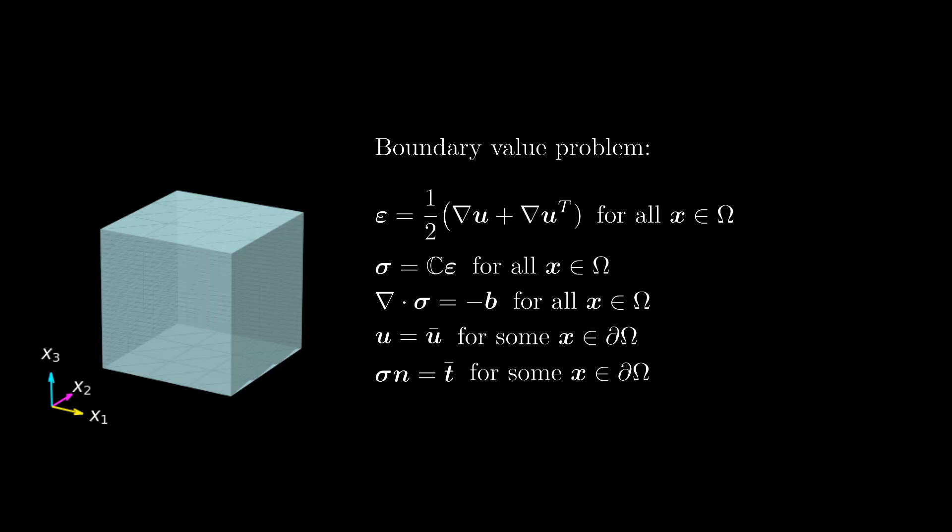In this solid mechanics example, the boundary value problem relates the displacement field to the strain field, to the stress field, and to physical quantities at the boundary. Given some material properties and sufficient information at the boundary, like for example applied displacements or boundary forces, the boundary value problem can be solved to determine the displacement field over the solid.